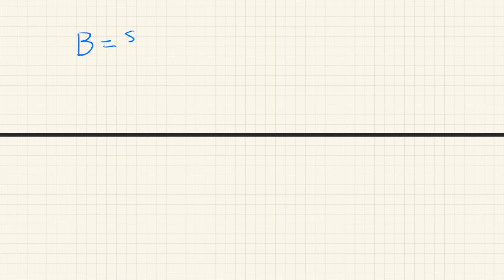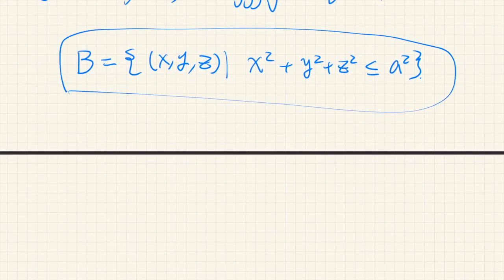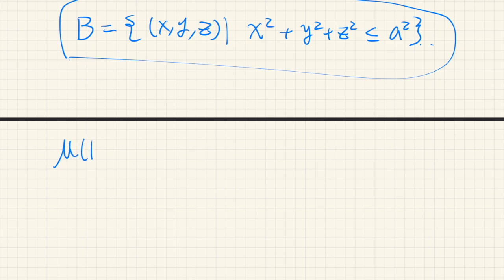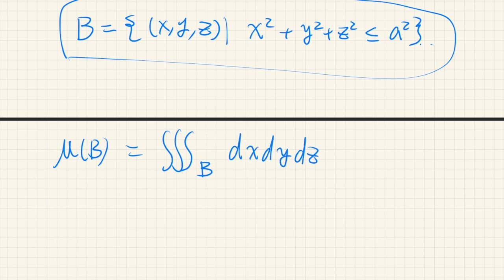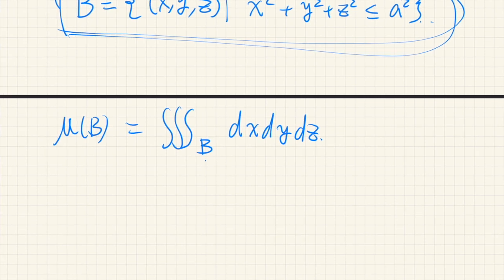Let's see a simple example: the volume of a sphere with radius a. This can be defined as the set of points such that the distance from the origin is less than a, i.e., x² + y² + z² ≤ a². The volume of this sphere is calculated as the triple integral of dx dy dz over V. To calculate this, it is most convenient to use spherical coordinates.